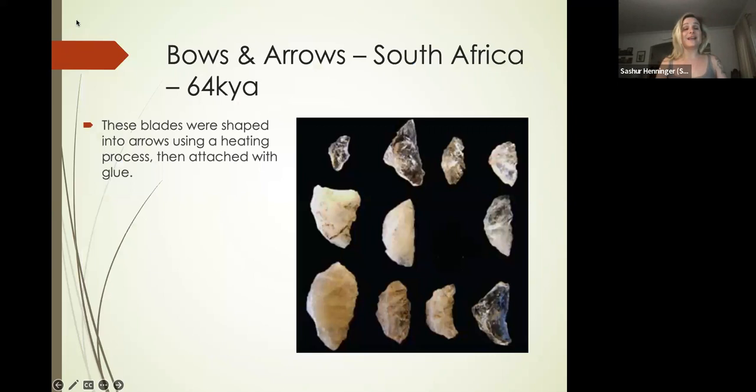Bows and arrows are being developed during this time. These are South African finds—64,000-year-old arrowheads that appear to have been shaped into arrows using a heating process.